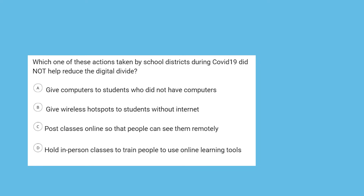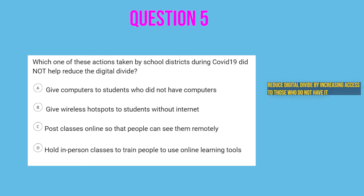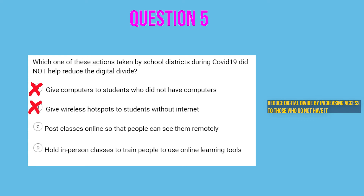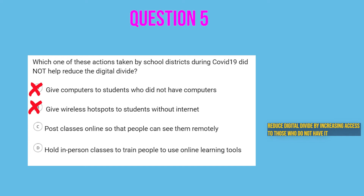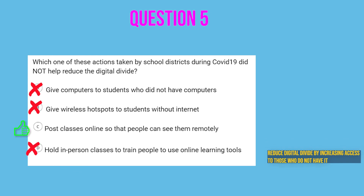Another question about how to solve the digital divide — a government organization trying to reduce it. Which one does not reduce the digital divide? Option A: give computers to students who do not have computers — that does reduce it. Option B: give wireless hotspots to students without internet — that does reduce it. Option C: post classes online so people can see them remotely — that does not reduce the digital divide because it does not give computing to those who do not have it; it's a good idea generally, but not for reducing digital divide. Option D: hold in-person classes to train people to use online learning tools — this does reduce it, because giving computing knowledge to those who do not have it counts.